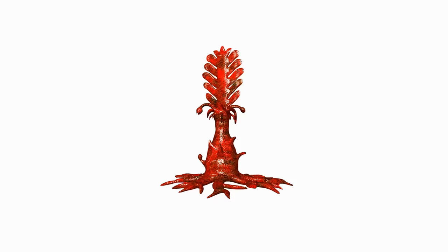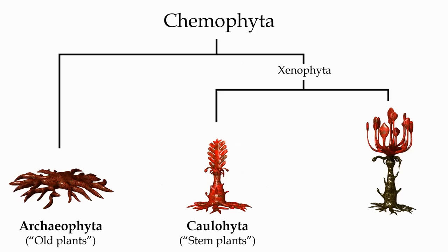But the clade from which the terrestrial plants descend, which we'll call xenophytes, will evolve the specialized tissues necessary to grow roots and stems to take up minerals from the soil and grow upwards to gather more sunlight. And one clade of these plants, which we'll call the xylophytes, may then evolve tough support tissues to let them grow into the first trees.